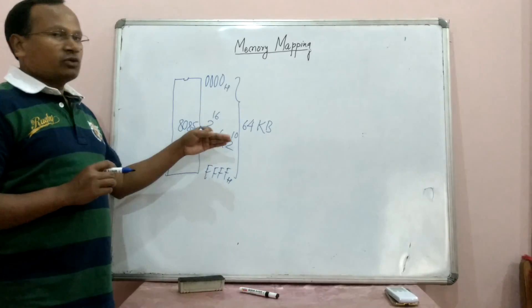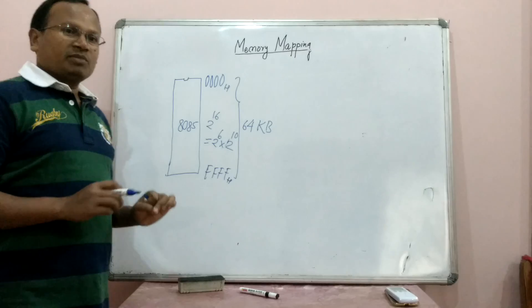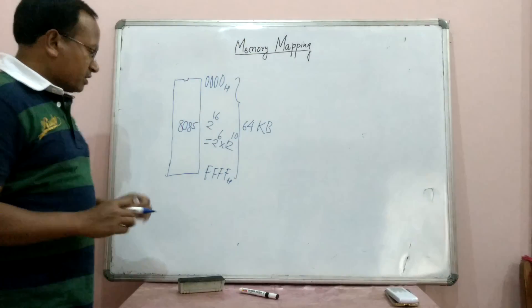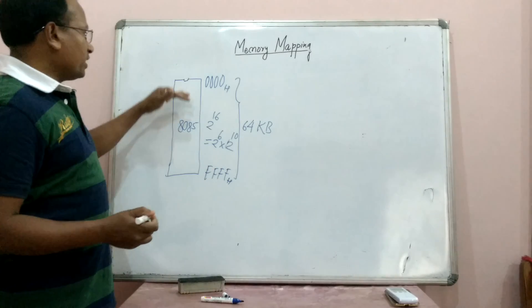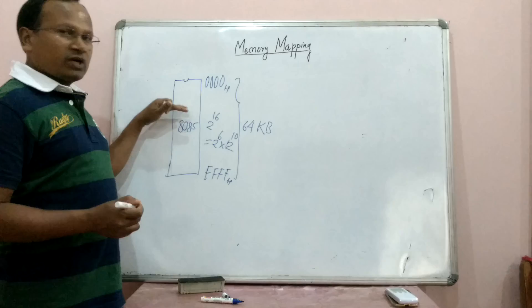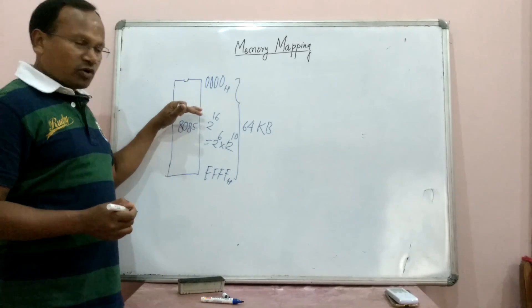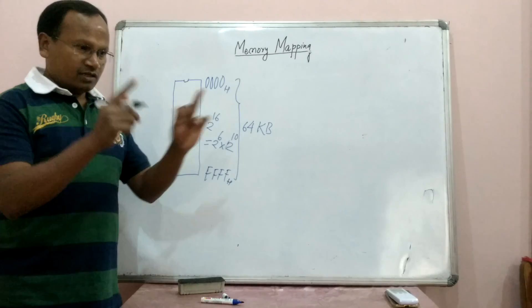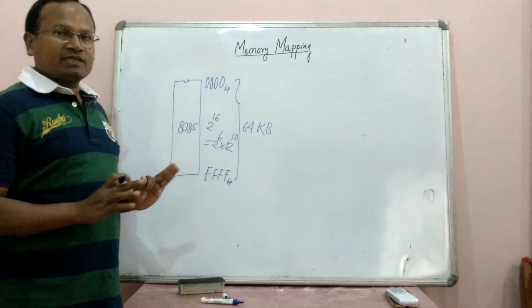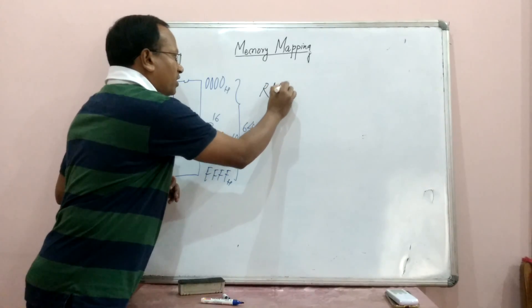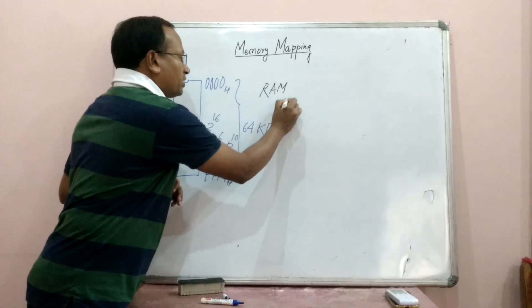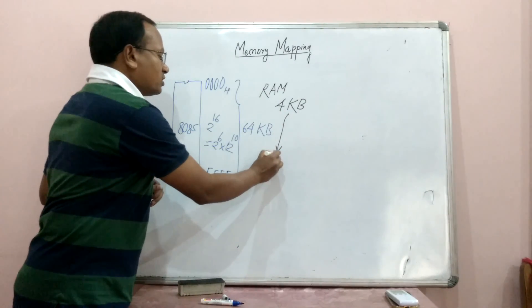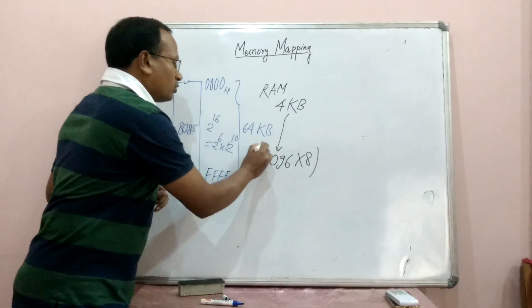This is one example to understand the concept of memory mapping; the same concept applies in all microprocessors and computer architectures. Suppose there is a RAM of 4KB. In the beginning memory locations there are some booting programs and monitor programs, then there is user space. What we are interested in here is a RAM device of size 4KB. 4KB can be written as 4096 x 8, where 4096 represents the number of registers.